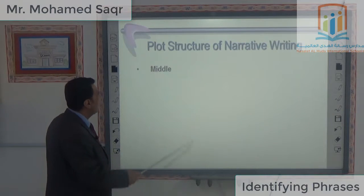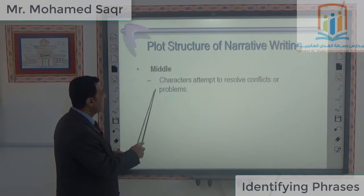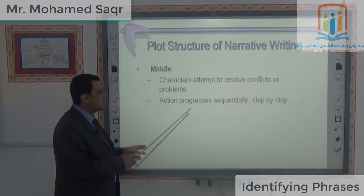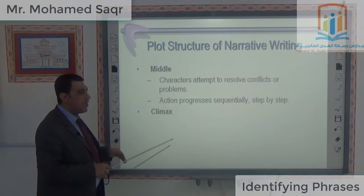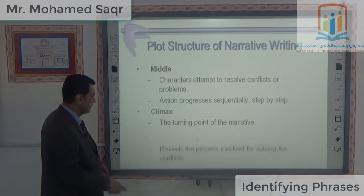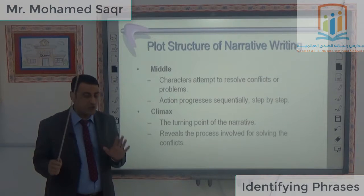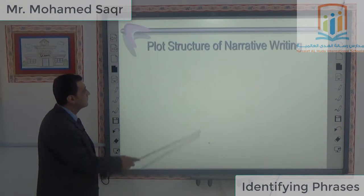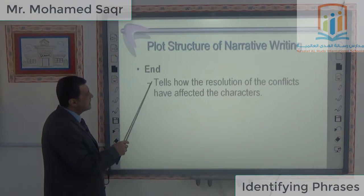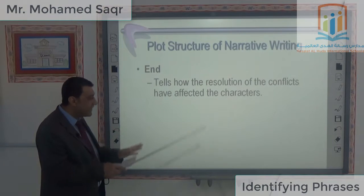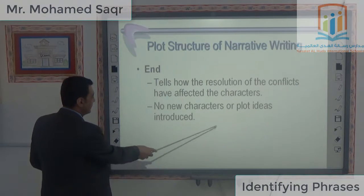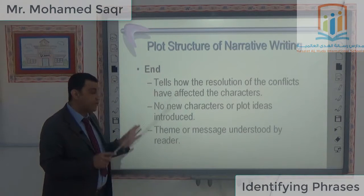The middle of the plot must contain characters' attempts to resolve conflicts or problems. Action progresses sequentially, step by step. Then comes the climax — the turning point of the narrative, which reveals the process involved in solving the conflicts. Finally, the end tells how the resolution of the conflicts has affected the characters, and the theme or message is understood by the reader.